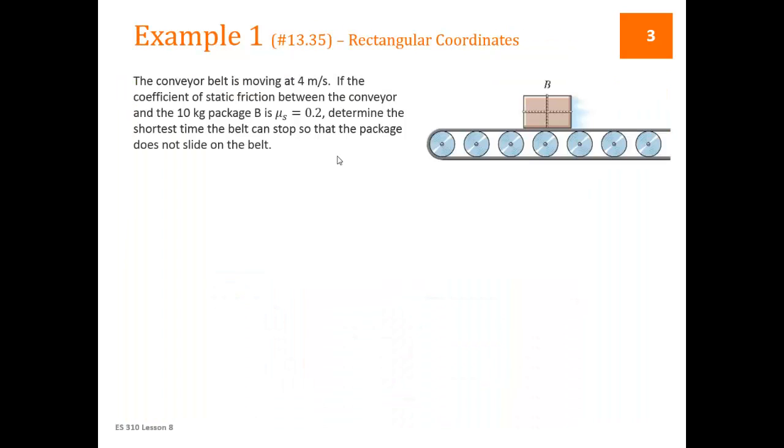So now let's take an example using rectangular coordinates. We have a conveyor belt that's moving at a given speed, 4 meters per second, and we're given a coefficient of static friction, so this is a friction-type problem, between the conveyor and a 10 kilogram package.